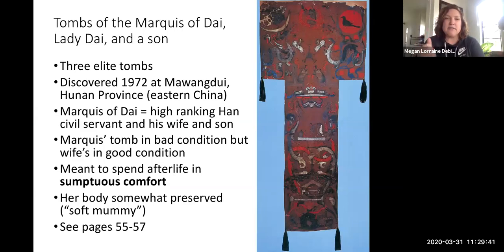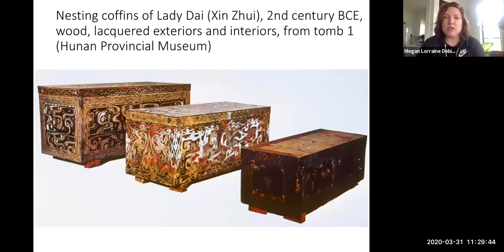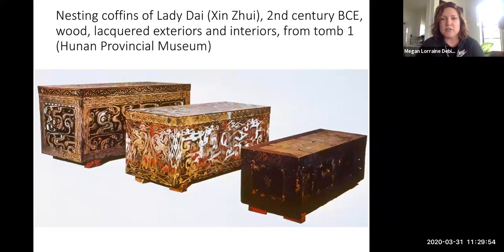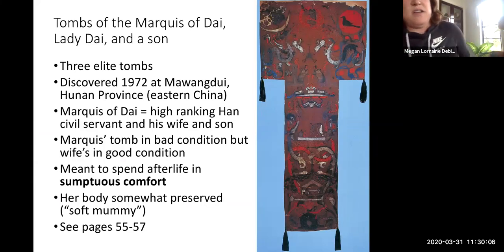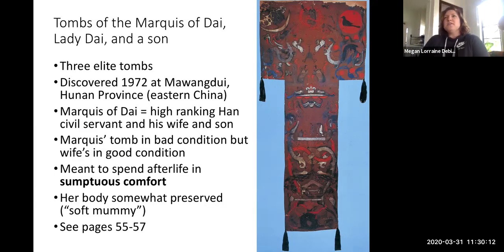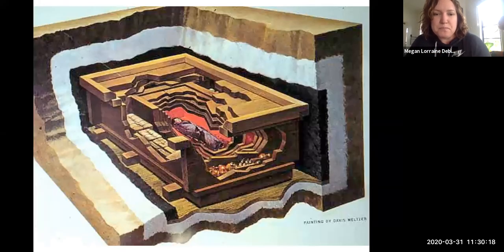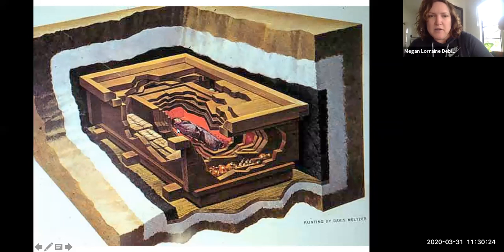This is a burial from a high-status elite family. There are three tombs discovered in the 1970s — not that long ago in archaeology terms. There are three elaborately decorated coffins: the husband, the wife, and their son. His tomb is not in good condition, but her tomb — the wife's — was in really, really good condition. The body was laid inside a series of coffins built around it, apparently well preserved — sort of like a soft mummy, like those beef-jerky-looking saints in European Catholic churches.